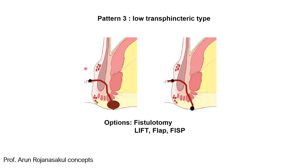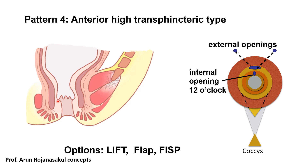The fistula starting at the dentate line crossing both sphincters — lower part of the external sphincter — forming an abscess or external opening in the perianal space is the low transsphincteric type. Fistulotomy is the best option, but in scenarios where sphincter preservation is needed, sphincter-preserving procedures — either LIFT, flap, or fistulotomy with sphincteroplasty — are options. Anteriorly, if the fistula starts at the dentate, crosses the internal sphincter and the higher part of the external sphincter, reaching the perianal space — forming abscess at the infralevator, ischioanal, or perianal level — that is the anterior high transsphincteric fistula. Dividing the external sphincter in this type leads to incontinence, so fistulotomy should be avoided.